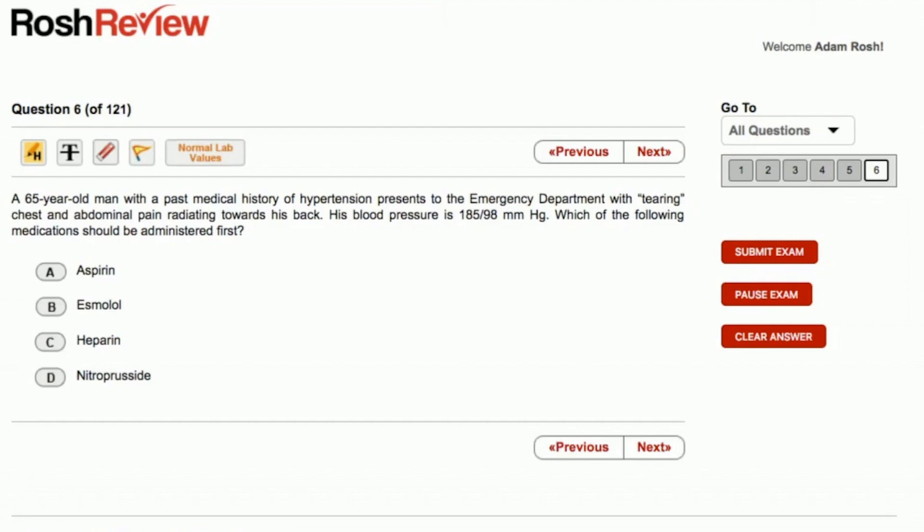Well, it doesn't get more classic than what we see here to make this diagnosis. We have an older gentleman, he has a history of hypertension and he complains of a tearing pain, chest pain, both including the chest and the abdomen and it radiates to his back. So it doesn't get more classic than this for the diagnosis of aortic dissection.